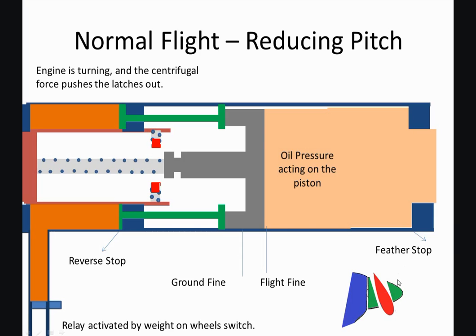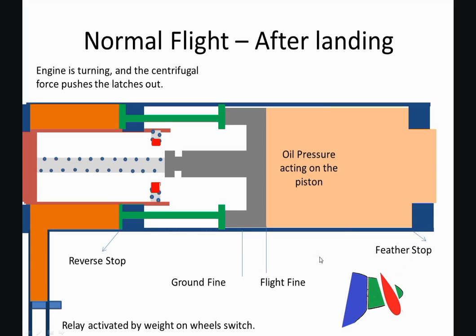So what happens when we get on the ground and we want to go back to ground fine or into the ground range, maybe even do reverse pitch? Well, what happens is when we land, the solenoid here is activated by the weight-on-wheels switch or the squat switch.